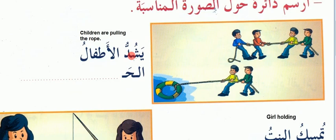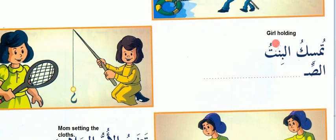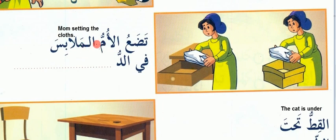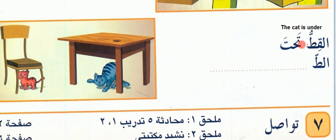They are showing here: Yashaddu al-itfal — the children are pulling. What? Al-habal — pulling the rope. You have to complete it by yourself. Tamsuku al-bint — the girl is holding. What is she holding? You have to tell by yourself. Tazau al-um al-malabis — Mom is setting the clothes. See where she is setting — you have to write here. Al-qittu tahta — where it is, you have to write both things.